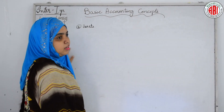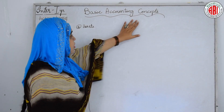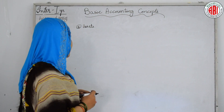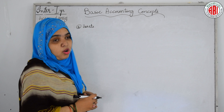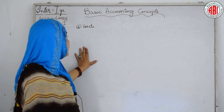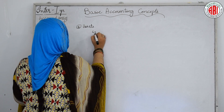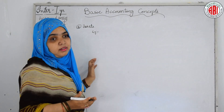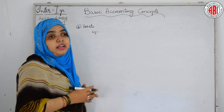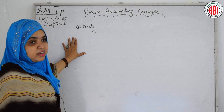Our next basic accounting concept is assets. What are assets? Assets are the properties of the business — they are owned by the proprietor. Examples of assets are furniture, machinery, cash, debtors, investments, and goodwill. All these are examples of assets.